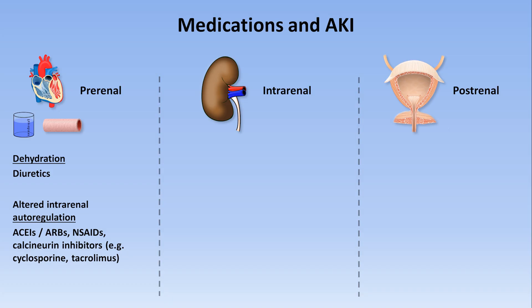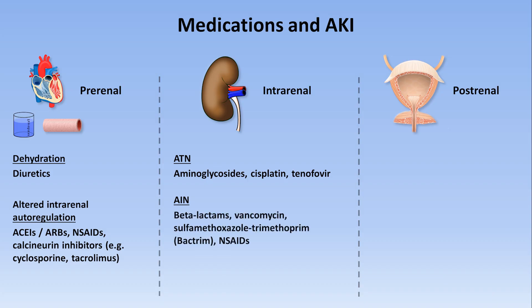Drugs that fall into the true intrarenal category include those which directly cause ATN. Aminoglycosides are particularly infamous for this, but the chemotherapeutic cisplatin and the antiviral tenofovir both belong here as well. Regarding AIN, or acute interstitial nephritis, many drugs have been implicated, but most commonly beta-lactam antibiotics, vancomycin, the combination drug sulfamethoxazole-trimethoprim (marketed in the US as Bactrim), and NSAIDs.